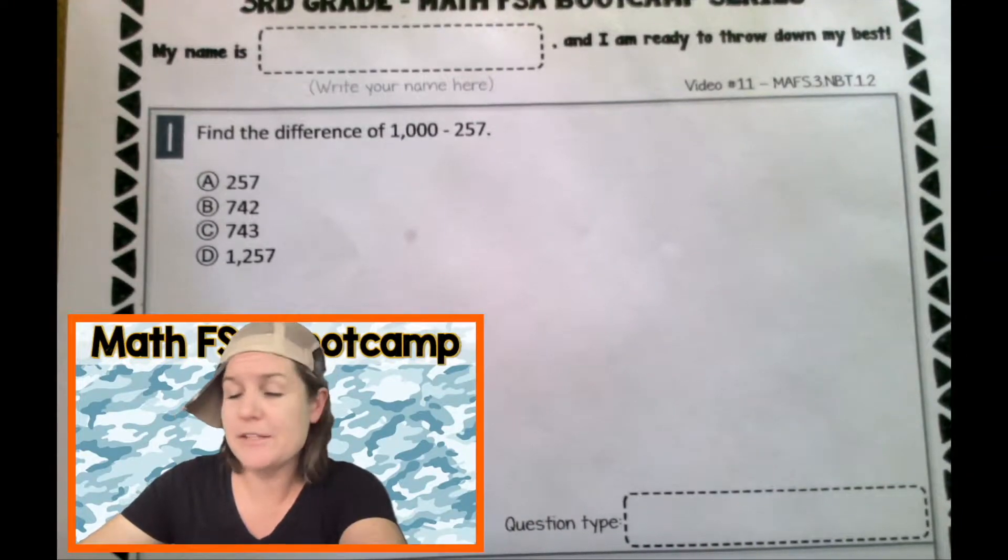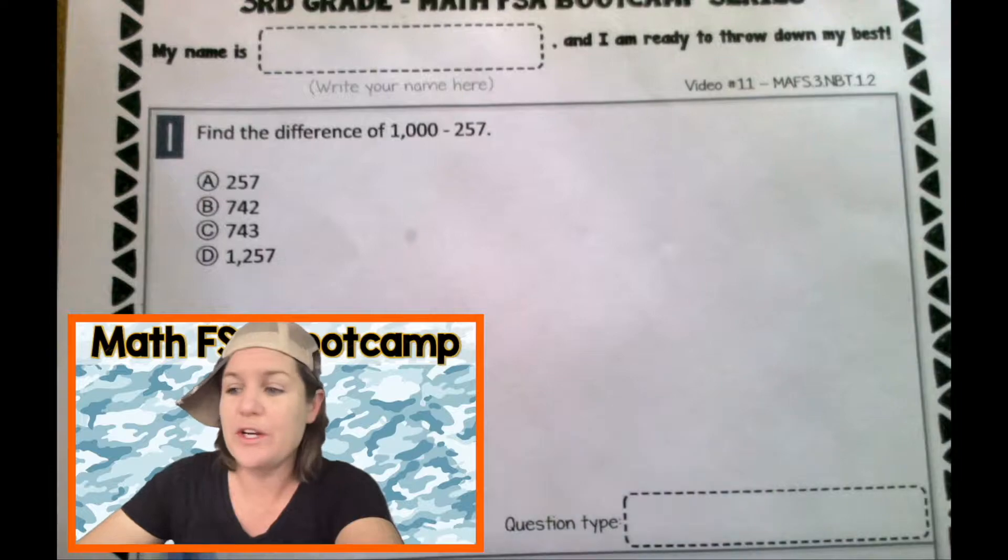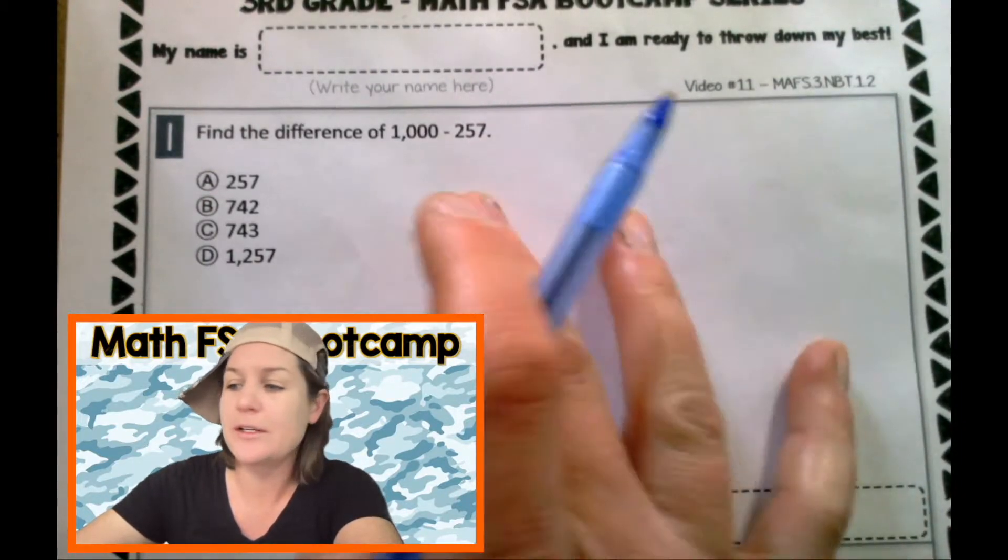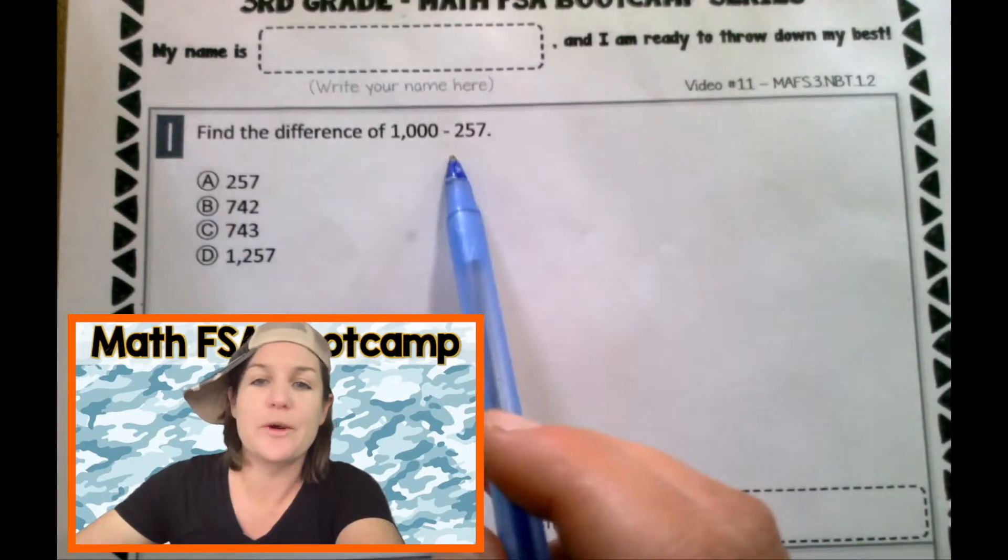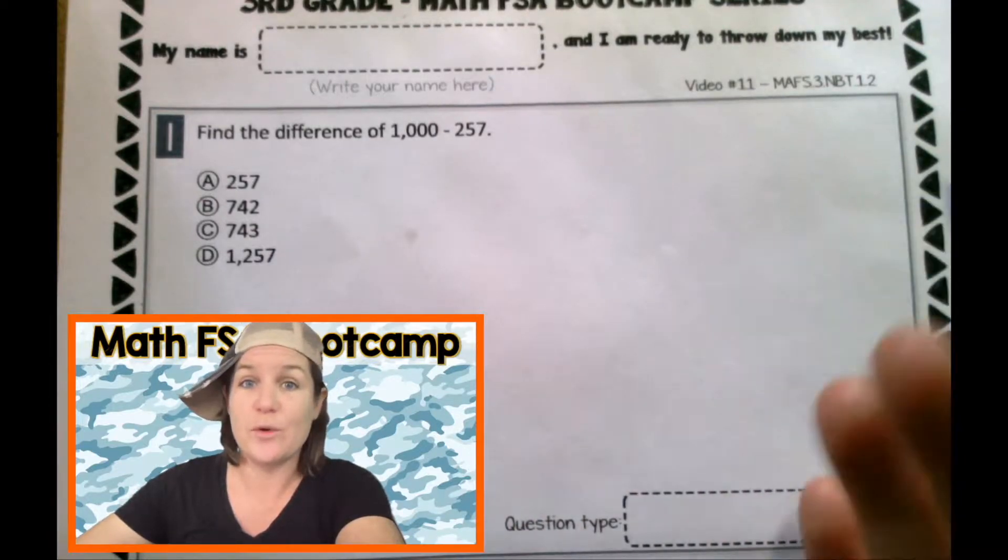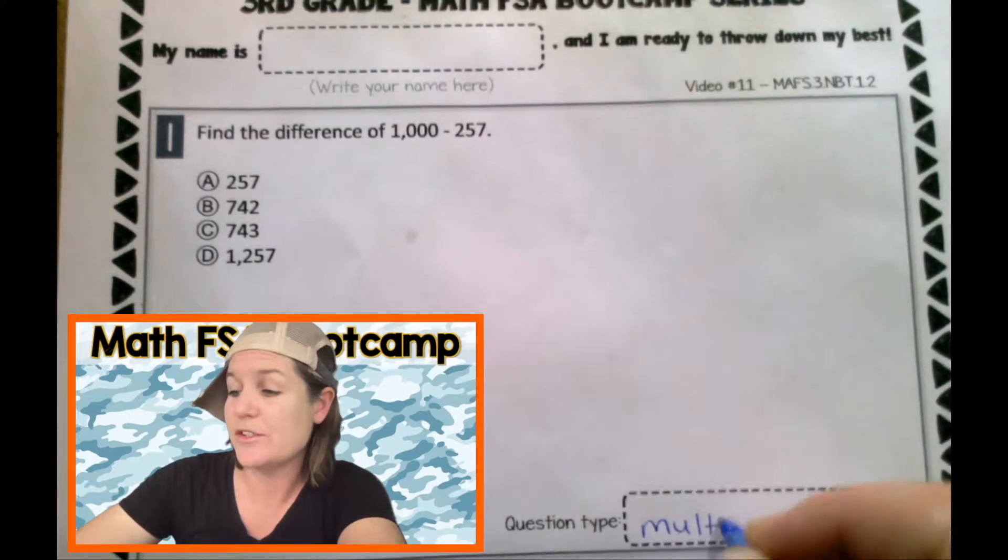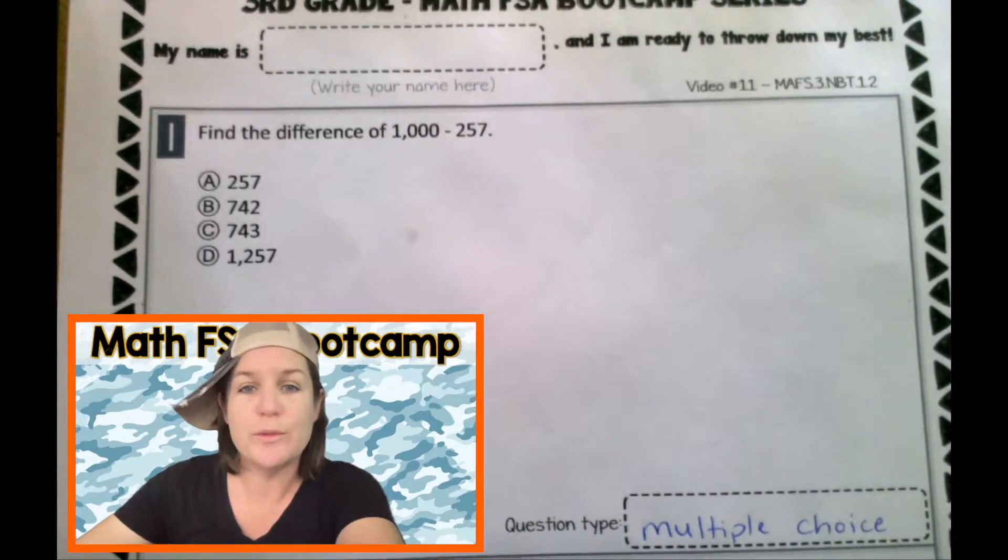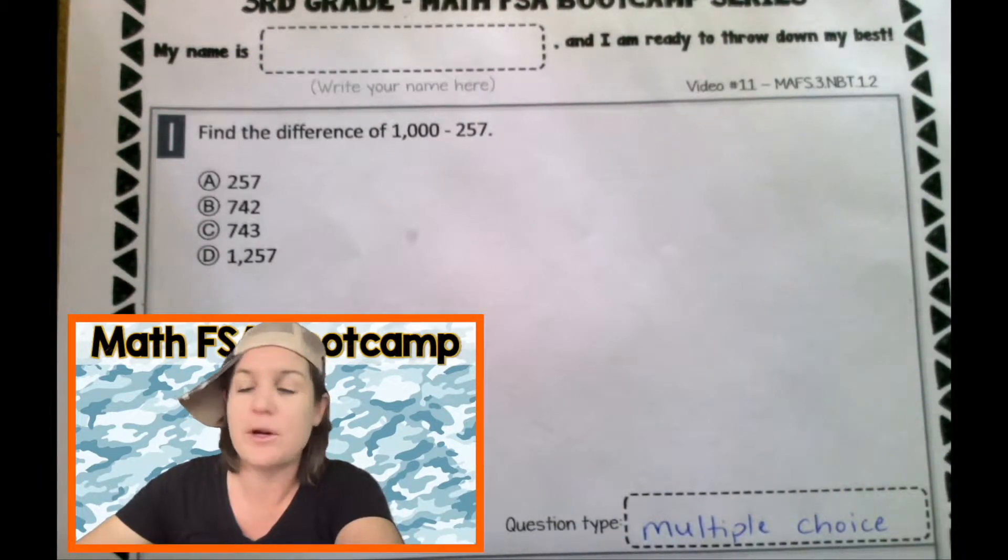Welcome back, everybody! Still rocking the sideways hat. Oh, yes. Okay, so we are at number one right here. And is that a smudge on my paper? First, we're going to identify the question type. So I see a short little question. That's always nice, right? With four answer choices. So what kind of question is this? Yeah, it's a multiple choice question. So let's write that in there.